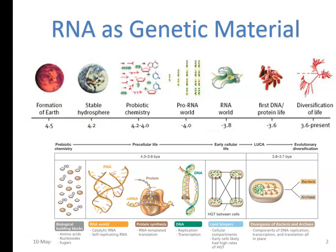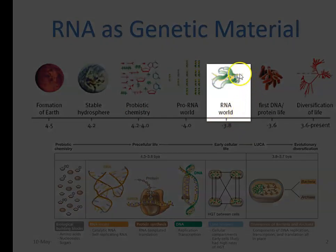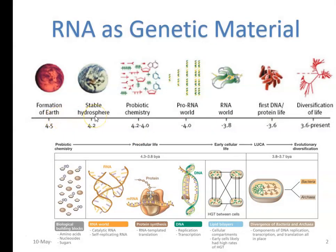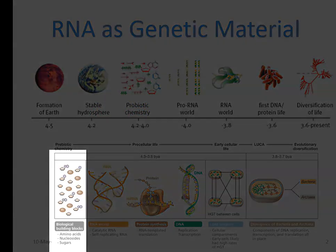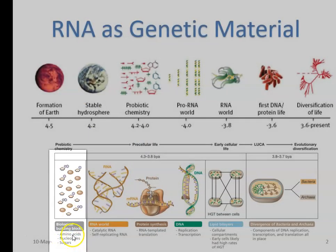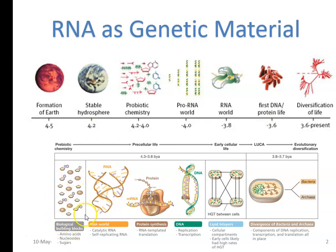This image shows from the time of Earth's formation to the diversification of life. During this course of evolution, at some part of the time, RNA has been serving as a genetic material. A stable hydrosphere was established and the prebiotic chemistry process started — that is the formation of certain important biomolecules or biological building blocks in a de novo process, such as amino acids, sugars, and nucleosides, which all started forming at that particular stage.